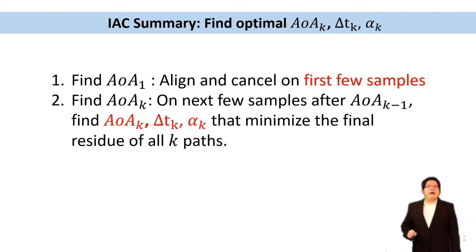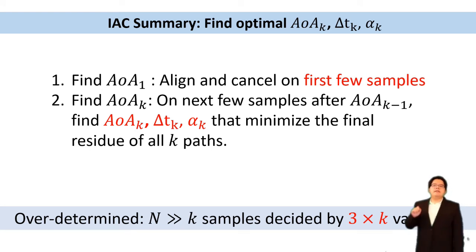First, we find the first pass AOA by align and cancel on the first few samples, where these samples are not polluted by the second pass. Second, when AOA one is determined, we find the AOA of next pass by solving the three variables: the new AOA, the path delay delta Tk, and the path scale alpha k, which minimize the final residual of the all k passes. Notice that this problem actually is an over-determined problem, because we have n samples, a very large number of samples, but we only have 3k variables, k is the number of echoes.